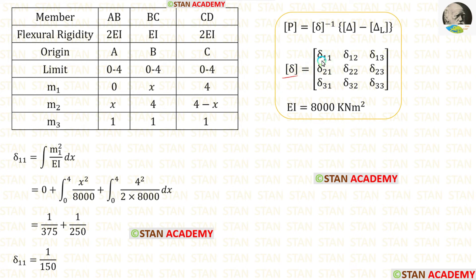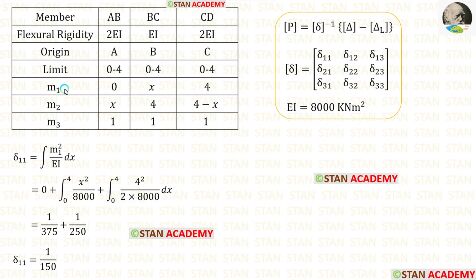Now let us build the flexibility matrix. For δ₁₁, the formula is ∫M1²/EI dx. For AB, M1 = 0 so it contributes nothing. For BC, the limit is 0 to 4 with EI. For CD, the limit is 0 to 4 with 2EI. Using a calculator for the integrations and adding the results gives δ₁₁.